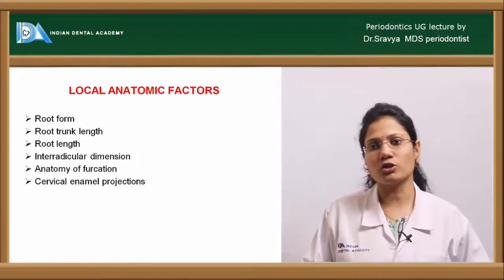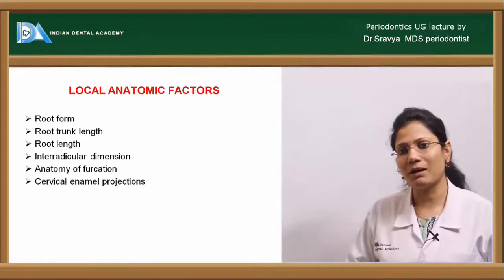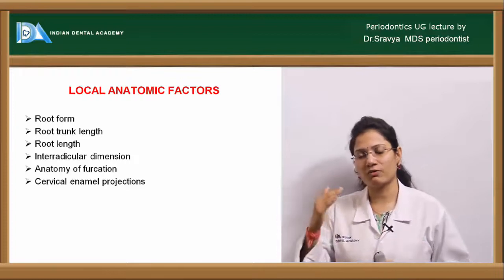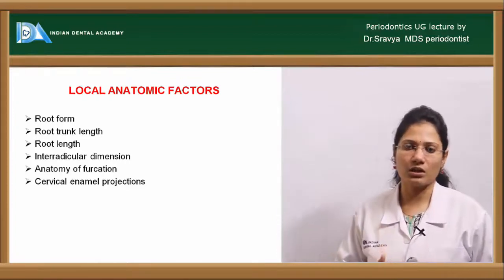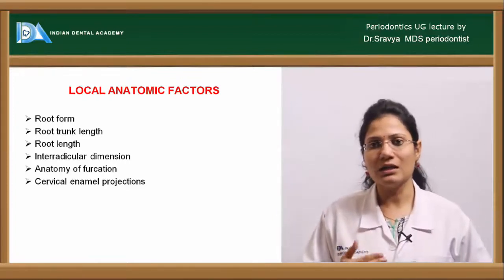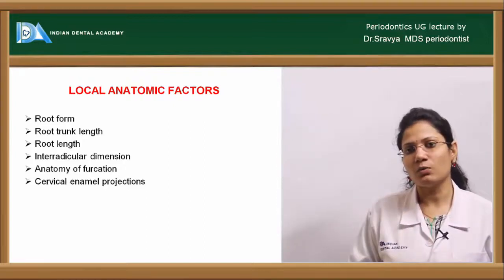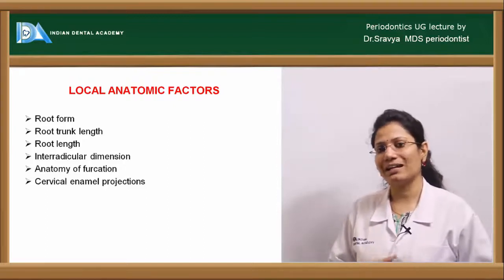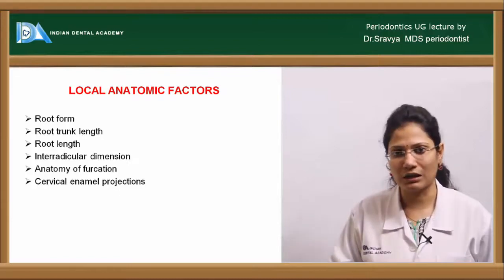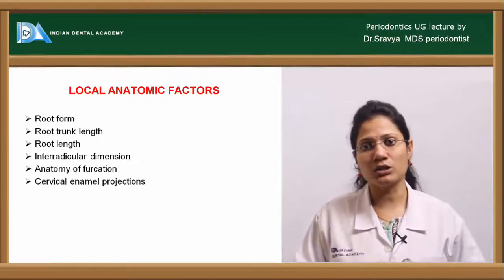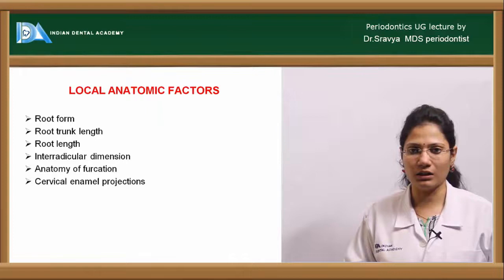The root trunk is the distance from the cementoenamel junction — where the root cementum begins — to the furcation entrance. A short root trunk length means the furcation can become involved at a very early age.